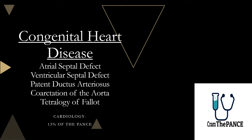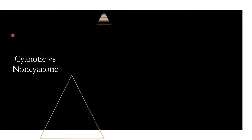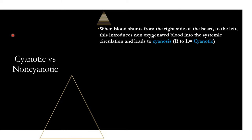Let's go ahead and get started. The first thing I wanted to go over is cyanotic versus non-cyanotic conditions. Cyanotic conditions are when there is a defect in the heart causing blood to shunt from the right side of the heart, which is non-oxygenated, moving to the left side of the heart, getting pumped out into the body. So you have this non-oxygenated blood getting pumped out into the body, which leads to cyanosis — a bluish discoloration of the body.